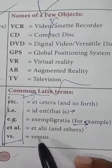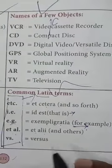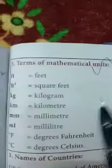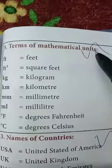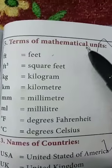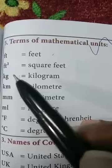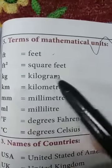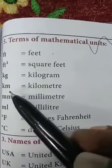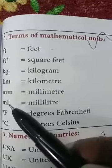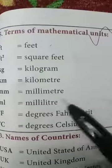VS stands for 'versus', as in India versus Pakistan — there will be a match between India versus Pakistan. We also have mathematical units: FT stands for feet, KG for kilogram, KM for kilometre, MM for millimetre, and L for litre.